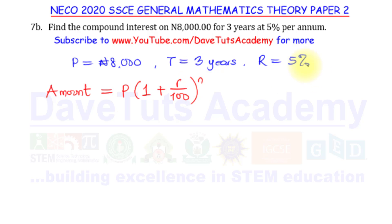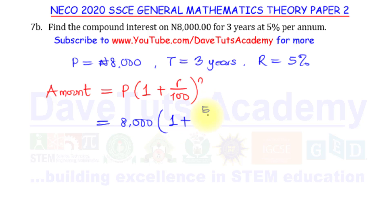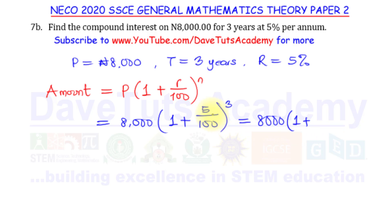The principal is 8000 and the rate is five percent. Putting in the values, we have 8000 Naira multiplied by one plus five over 100, raised to power three. Five over 100 is 0.05, so this becomes 8000 times 1.05 raised to power three.